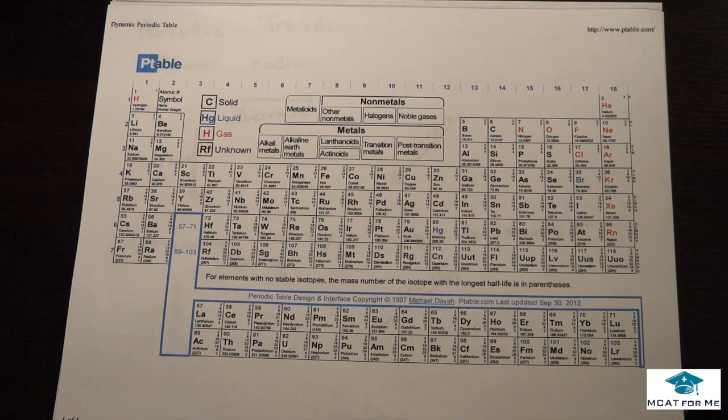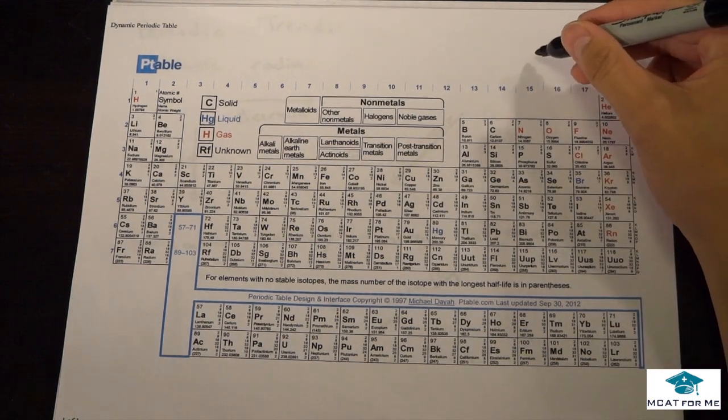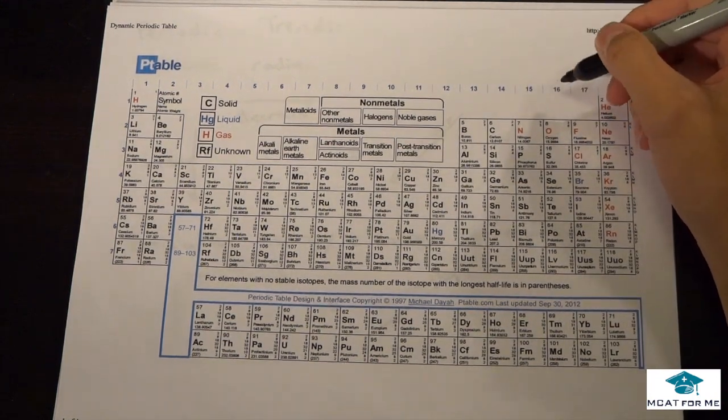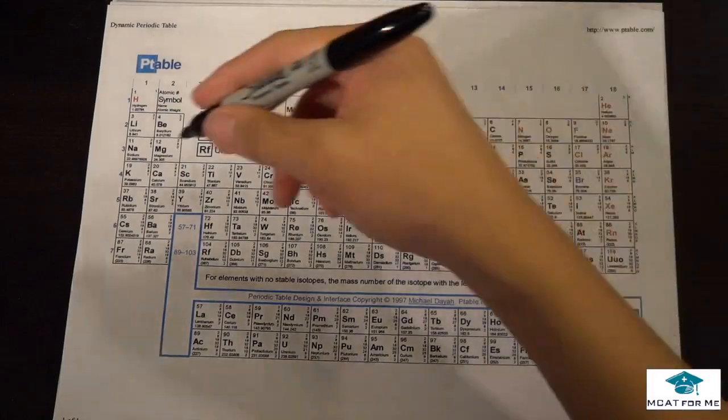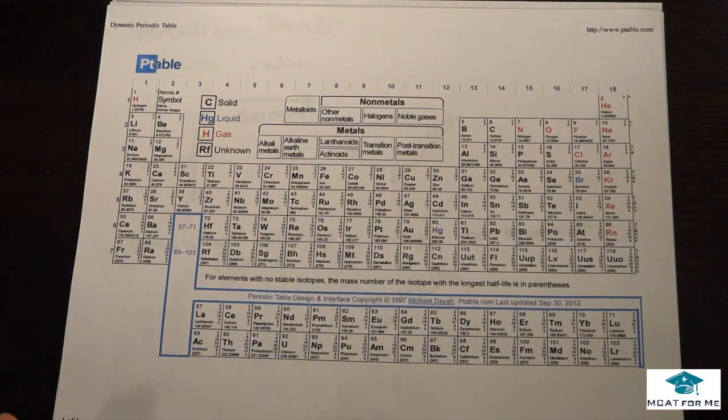So the first thing we're going to be talking about is just a very basic understanding of the periodic table. Vertically all these columns are called groups or families and horizontally these are called periods.